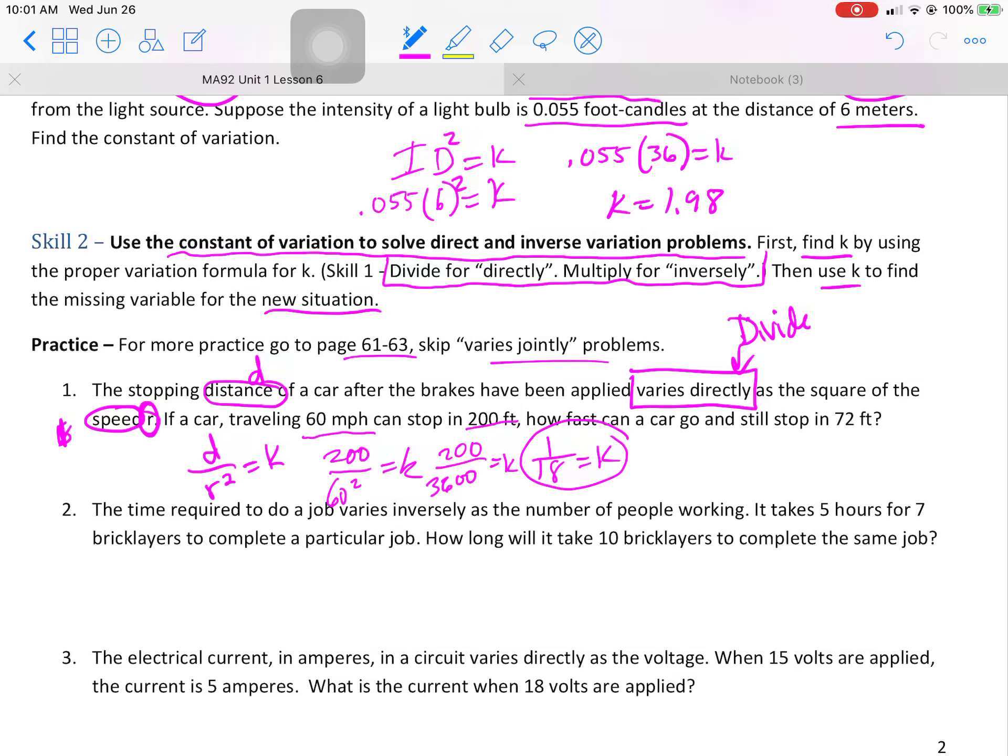So what we're going to do is take the new information. It stops in 72 feet. That's a distance. Distance goes on the top. How fast can it go means I don't know what r is. And k is 1 over 18.